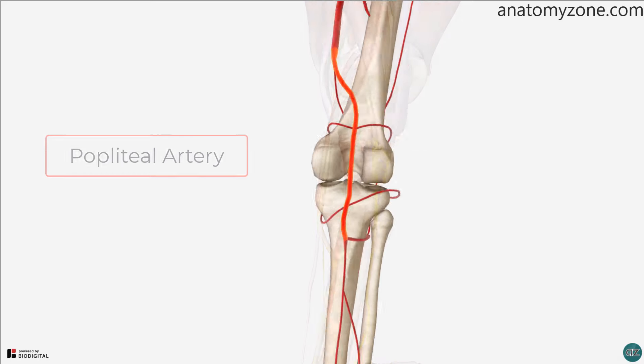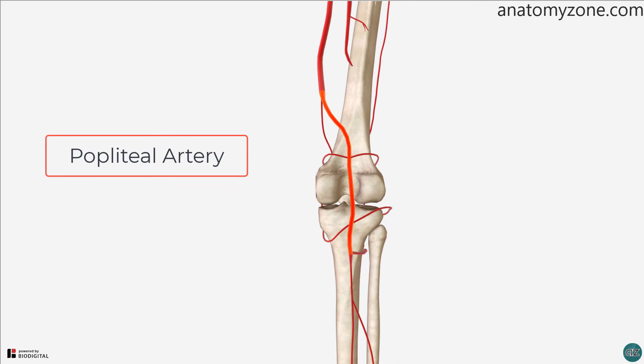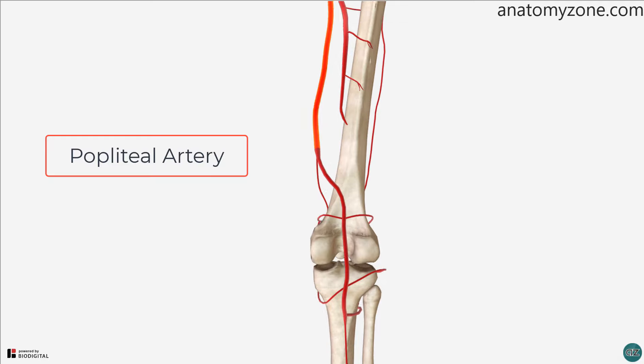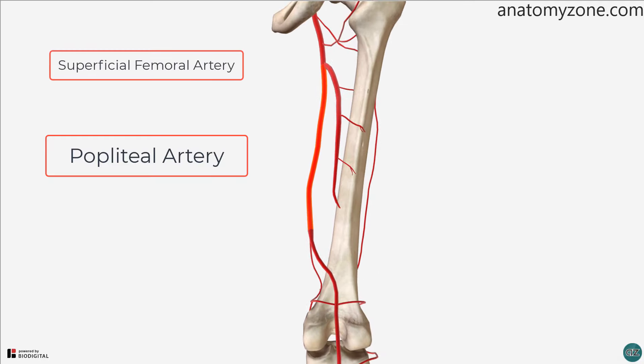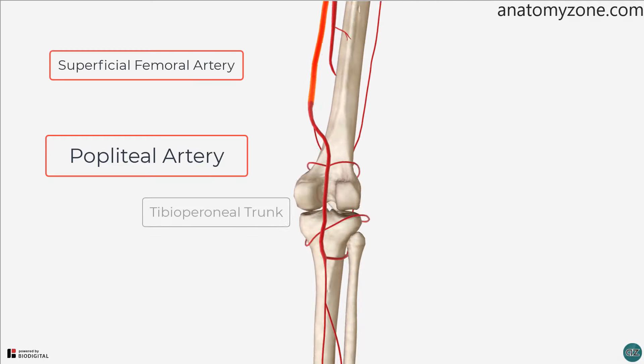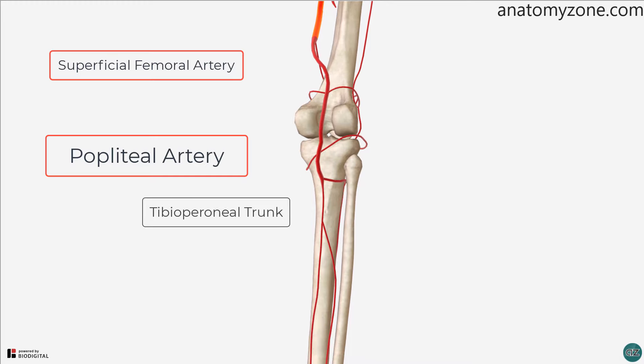The popliteal artery is the deepest structure in the popliteal fossa. It's a continuation of the superficial femoral artery and divides into the tibial peroneal trunk and the anterior tibial artery.